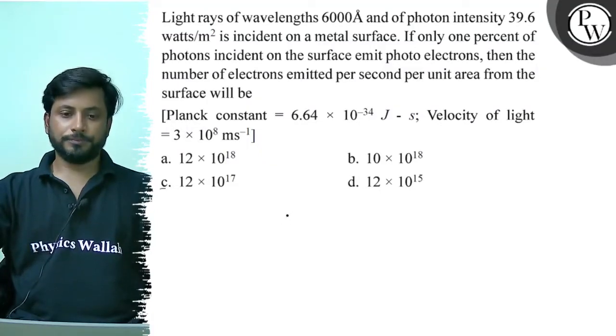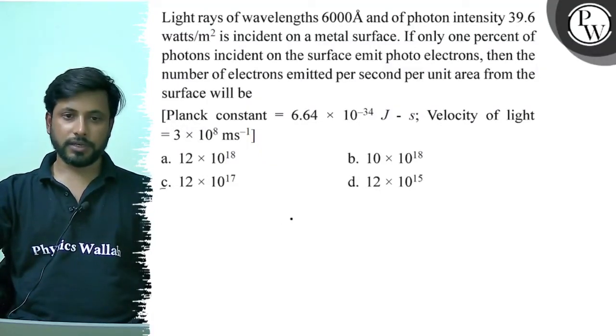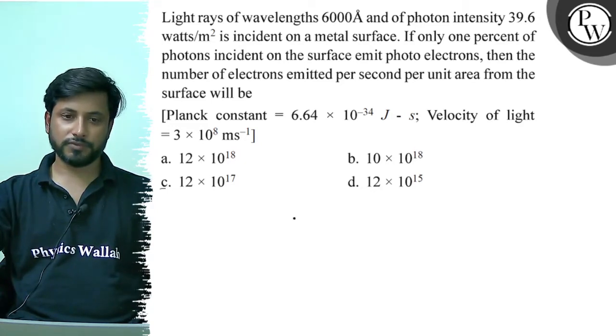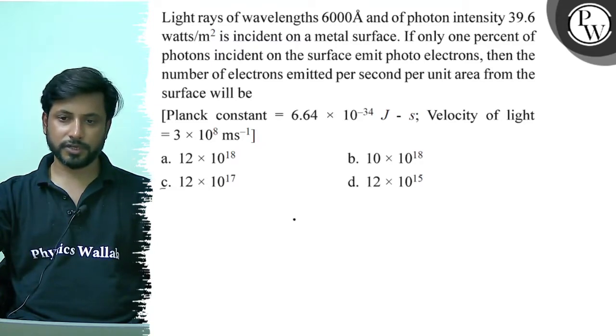Hello, let us see this question. Light rays of wavelength 6000 angstrom and photon intensity 39.6 watts per meter square are incident on a metal surface. If only one percent of photons incident on the surface emit photo electrons, then the number of electrons emitted per second per unit area from the surface will be.